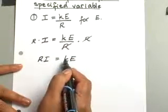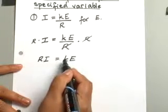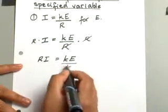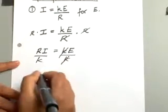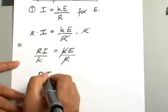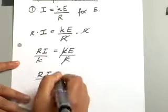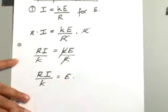Once you do that, now all you have to do is get rid of the K. Since you have K times E, you divide both sides by K. The K will cancel out, and you're left with R I over K equals E.